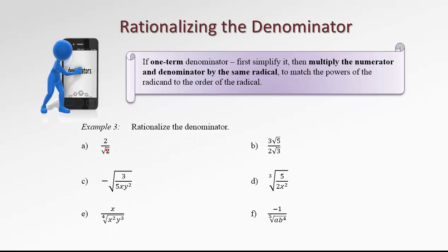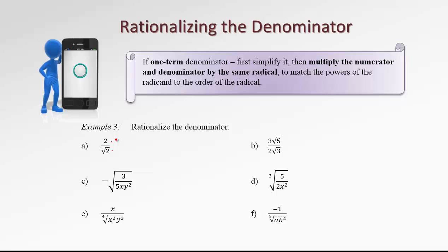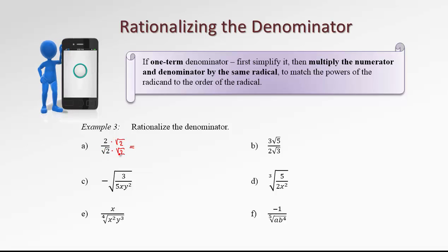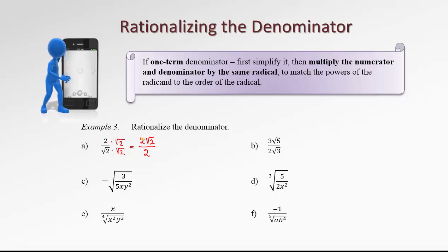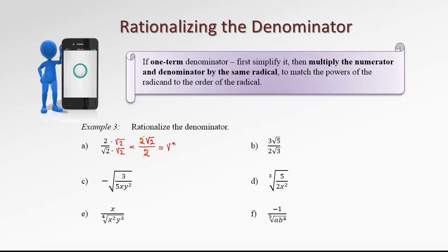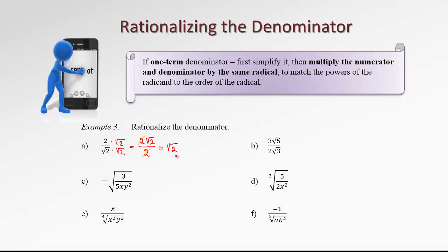To rationalize this fraction 2 over root 2, we want to get rid of this root 2. So what we do, we multiply the top and the bottom of the fraction by root 2 — to cancel the root in the denominator, because root 2 times root 2 annihilates the root, and we end up with just a single 2. Now in the numerator we have 2 root 2. The denominator of the resulting fraction is already nice — it's rational. We can check for possible simplifications; we can reduce the 2's, and the final answer is just a single root 2. This process gave us a really nice expression with no denominator at all.